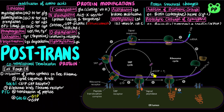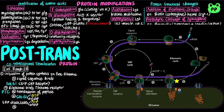GTP hydrolysis of both SRP and the SRP receptor triggers SRP to dissociate from the ribosome. Elongation of the polypeptide resumes, and the GTP-driven translocation complex feeds the growing polypeptide chain into the ER lumen until the complete protein has been synthesized. Signal peptidase cleaves off the N-terminal signal sequence within the ER lumen, and the ribosome dissociates and is recycled.